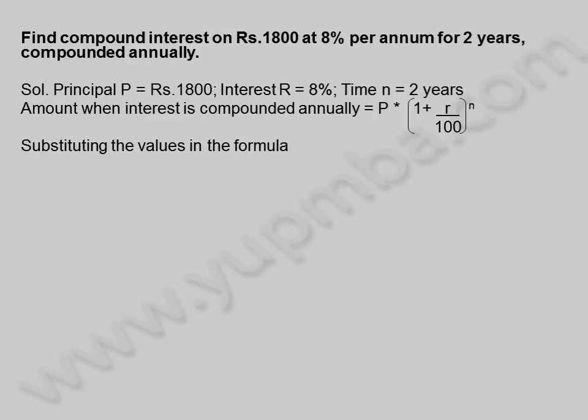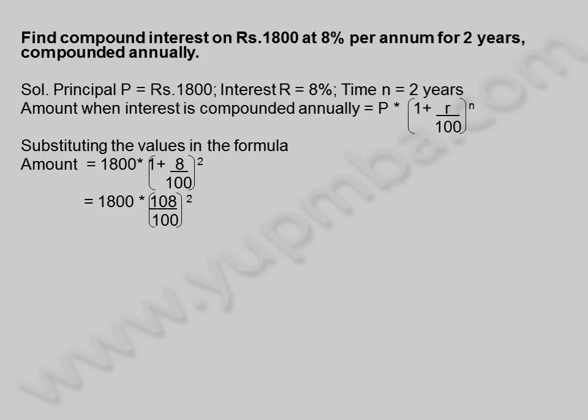Substituting the values in the formula. Amount is equal to 1,800 into 1 plus 8 by 100, whole square. Is equal to 1,800 into 108 by 100, whole square. Is equal to 1,800 into 27 by 25, whole square. Amount is equal to 2,099.52 rupees.